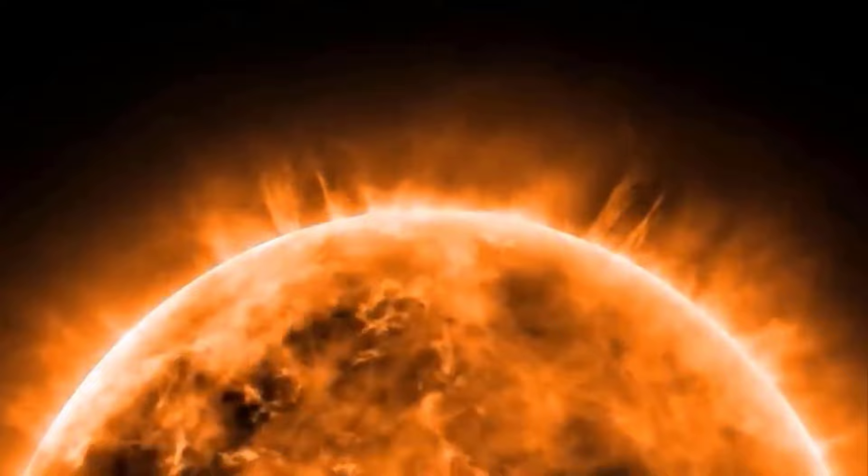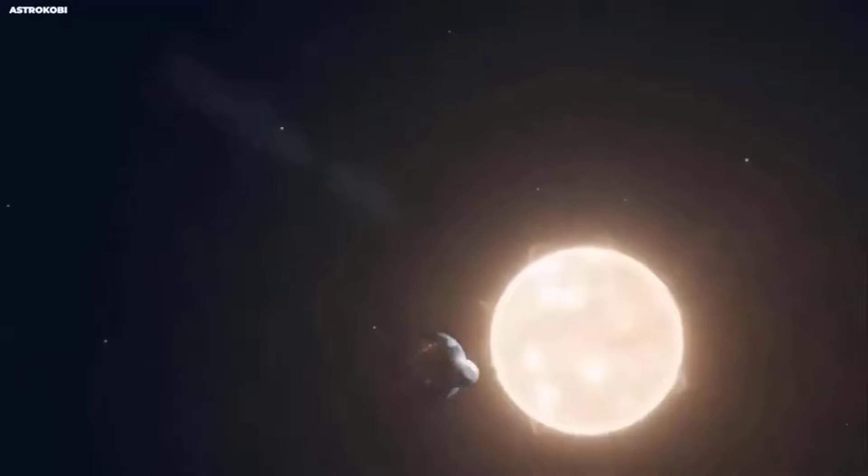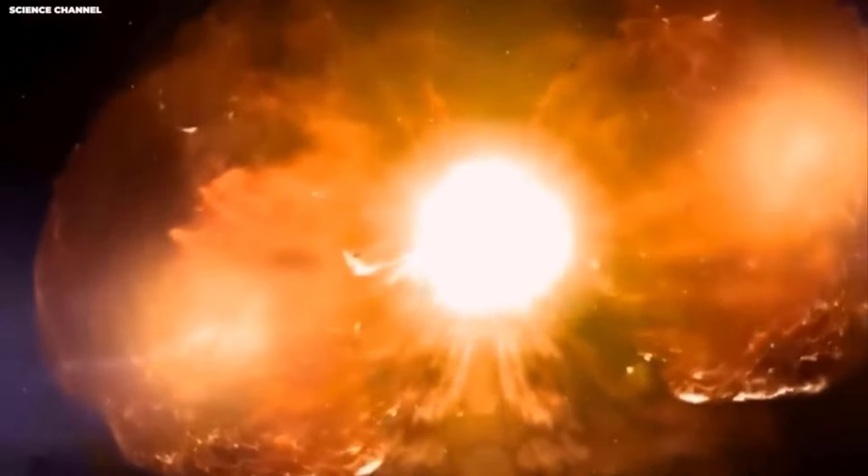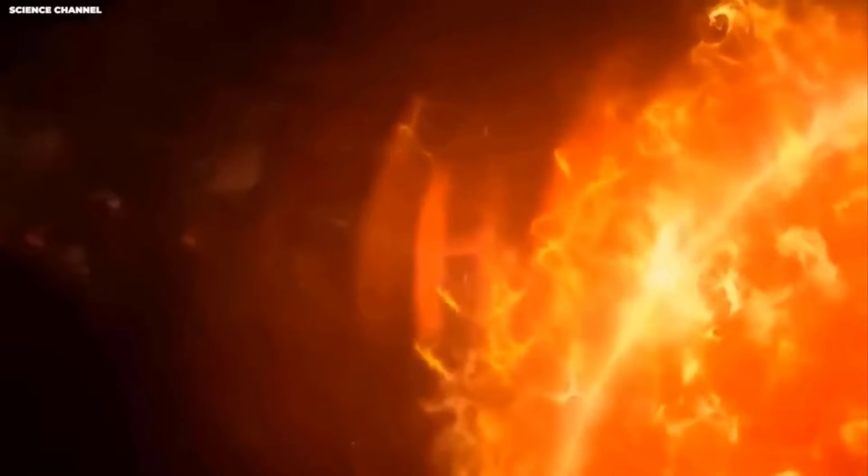Sometime in 2019, something interesting happened to Betelgeuse. This gigantic red star became much dimmer for a while because it emitted a bunch of gas turning into dust when it got colder. However, this has raised questions as to whether Betelgeuse is about to supernova. Supernovas are intense and brilliant star explosions in the final stages of a star's life.